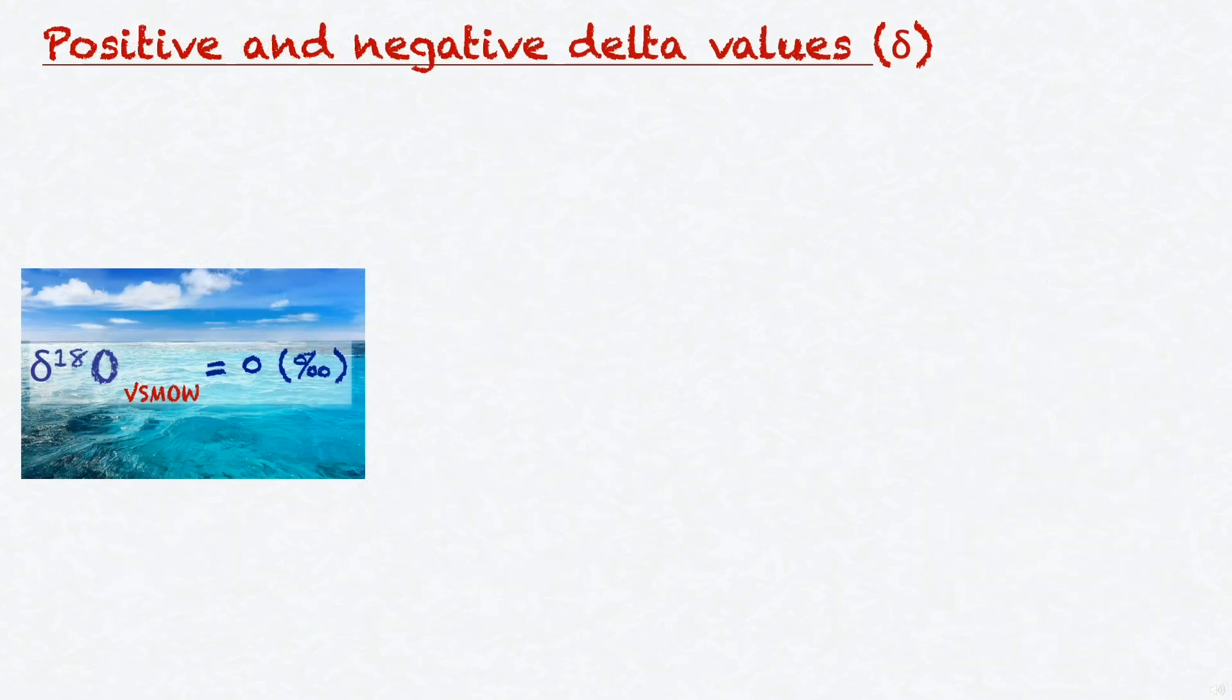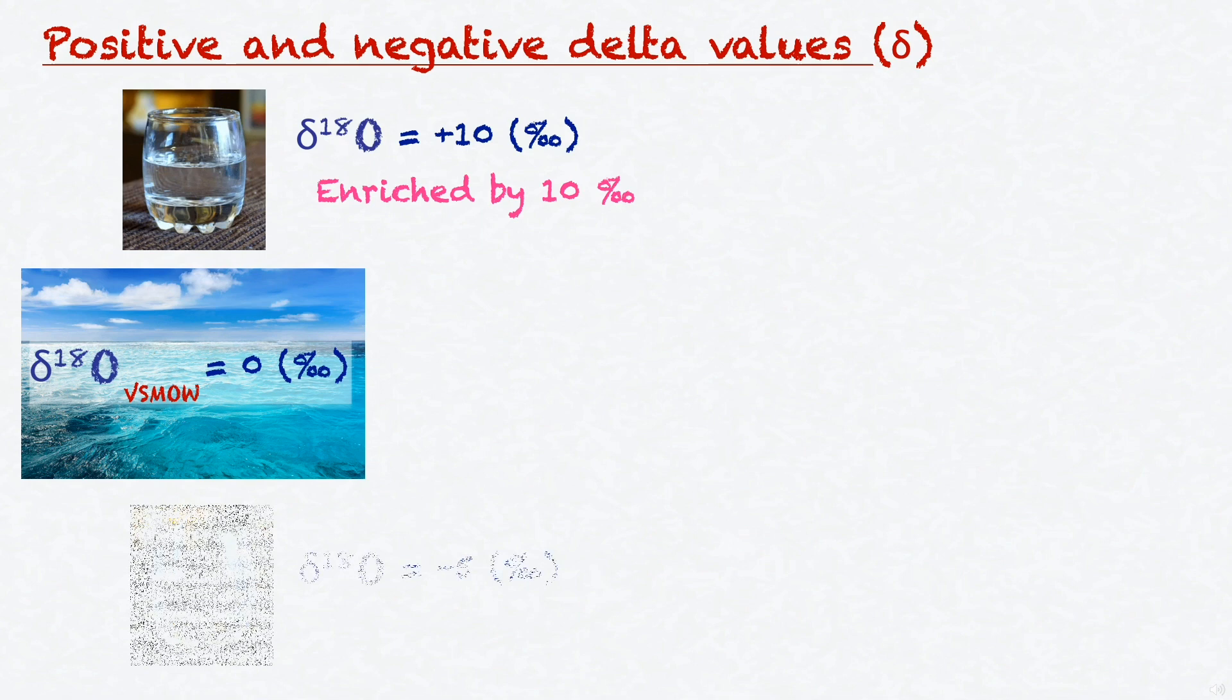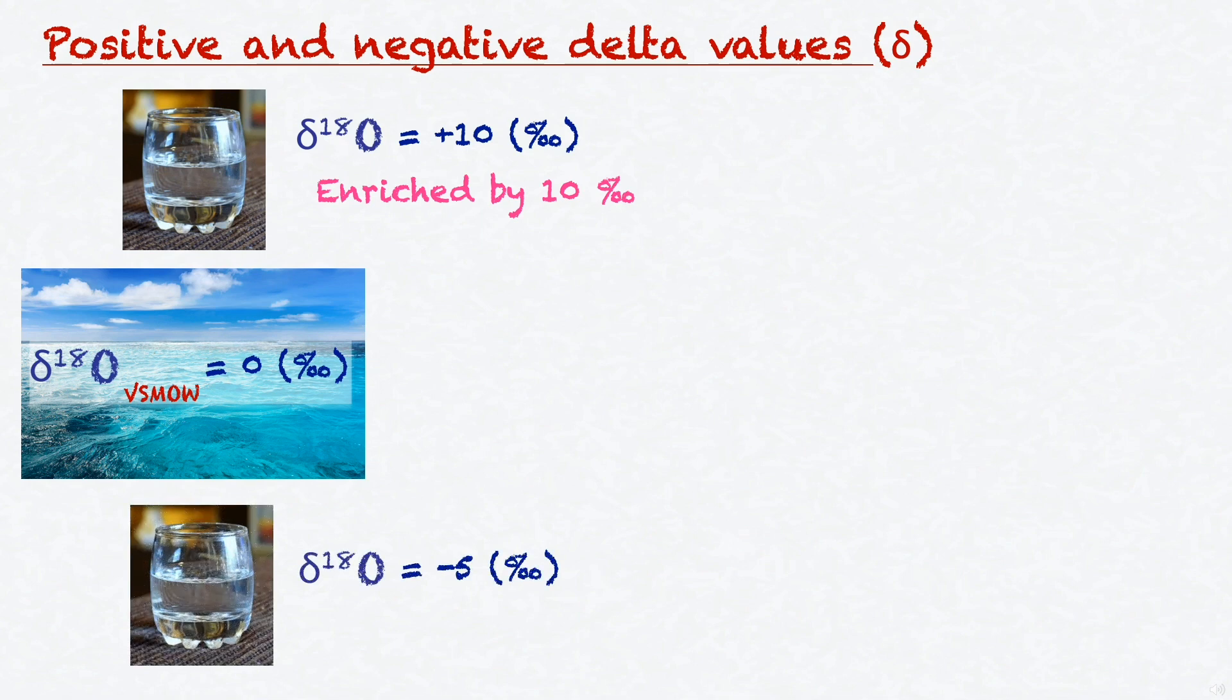So, let's talk about what positive and negative values might mean. If we have a delta per mil value that is positive, let's say, plus 10 per mil, this means that our sample has 10 per mil or 1% more oxygen-18 than VSMOW. In this case, we usually say that the sample is enriched by 10 per mil. Now, if we have a delta per mil value that is negative, let's say, minus 5 per mil, this means that our sample has 5 per mil or 0.5% less oxygen-18 than VSMOW. We then say that our sample is depleted by 5 per mil.